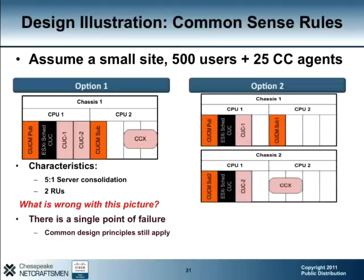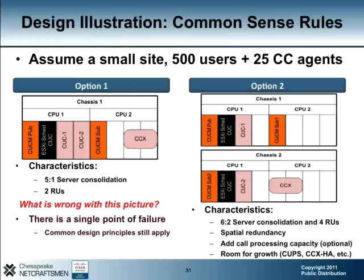In option two, we add another UCS platform. Each chassis has eight CPU cores, and we allocate CPU cores in the same manner as option one with two notable additions. Each compute server hosting at least one Unity Connection node must have a core dedicated for the ESXi scheduler. We have also added an additional Communications Manager call processing node. We can take advantage of this platform to have physical and spatial redundancy for our call processing and messaging applications. We can also add another call processing node to increase the robustness of our Communications Manager cluster, and we have growth capacity built in. We still have a good consolidation ratio of six servers down to two.